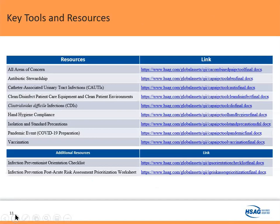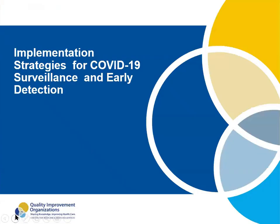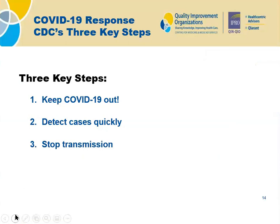We have a tremendous amount of resources, all available on the quality improvement website. CMS asks that anything we presented today can be taken immediately and used within your organization. IPRO couldn't be here today, so I've been asked to present their slides, which talk about COVID-19 surveillance and early detection in the nursing home. This focuses primarily on the CDC's three key steps: keeping COVID-19 out of the facility with screening protocols, detecting cases quickly with testing and symptom-based screening, and stopping transmission with cohorting, isolation precautions, hand hygiene, and more.